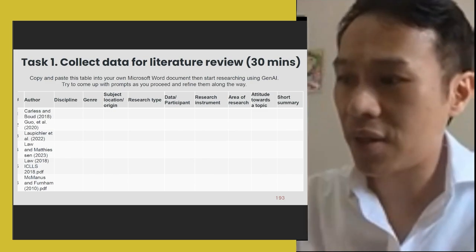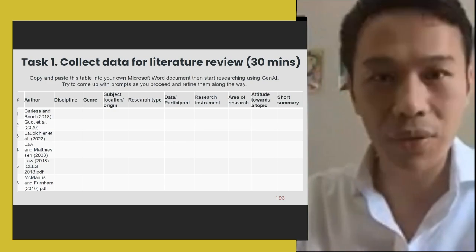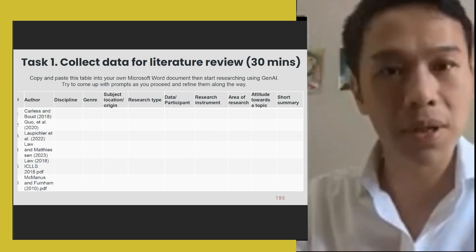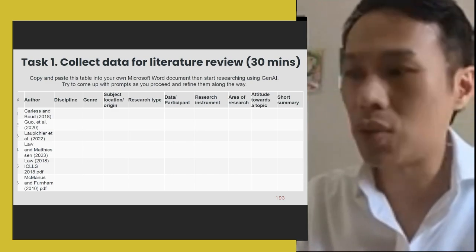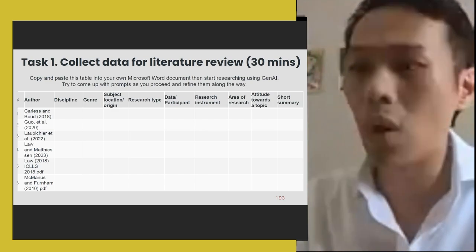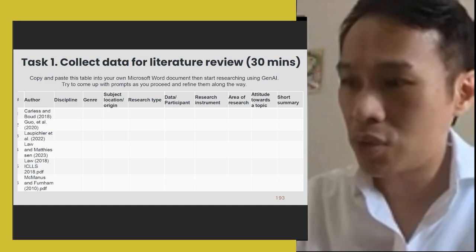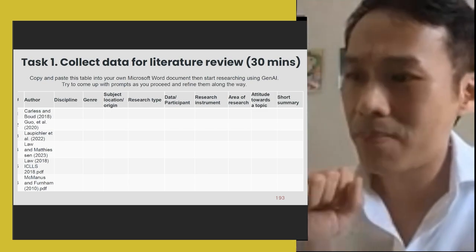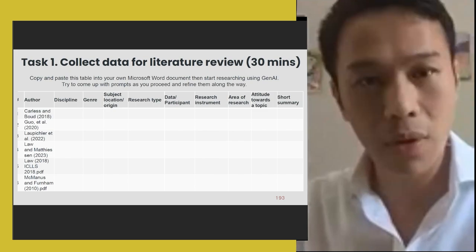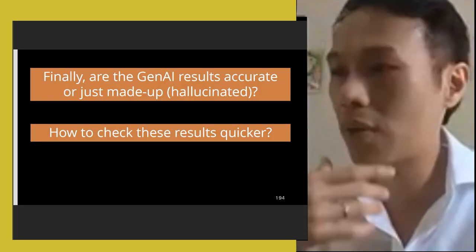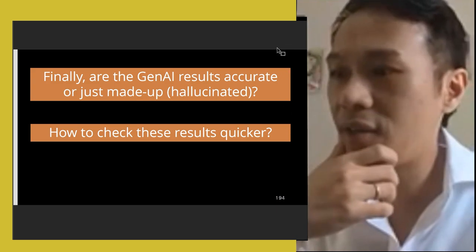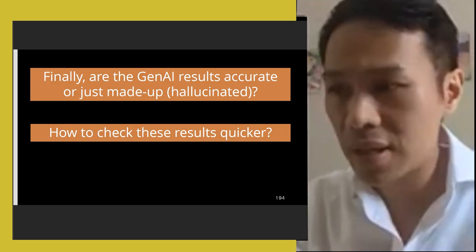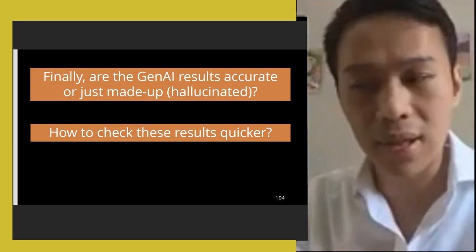After that, we start collecting data for the literature review. I run this as a 30-minute activity. I have some paper titles as examples, but I tell them to go back to their own discipline — since all students come from different fields — pick papers they want to learn more about, and try uploading them. They fill in the boxes in the tables. We observe their progress, and finally they reflect: are the GenAI's results accurate? Are they hallucinating? If so, what do you do? If not, how do you check the results?